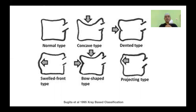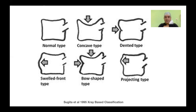Such fractures when seen on X-ray cannot simply be conserved — they need to be dealt with aggressively, possibly with surgery. Whereas a concave type or dented type are benign forms of osteoporotic collapse. Patients with this kind of picture can be treated with a brace, medical management for osteoporosis, and analgesics, and we can expect good healing. The swelled front, bow-shaped, and projecting types are notorious and can cause delayed complications.